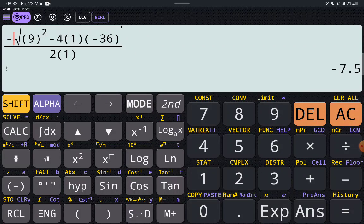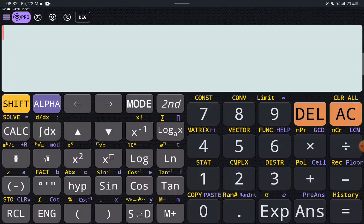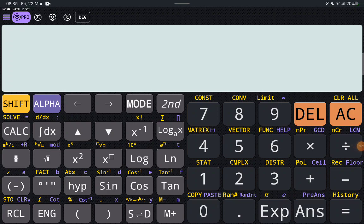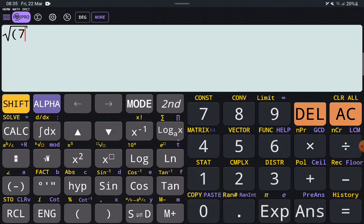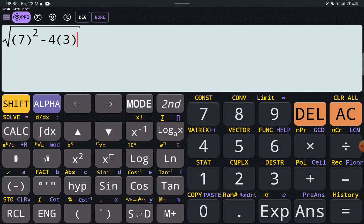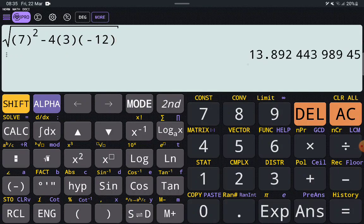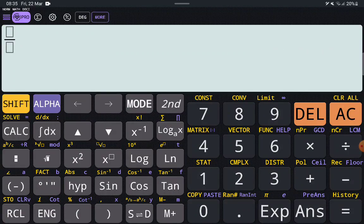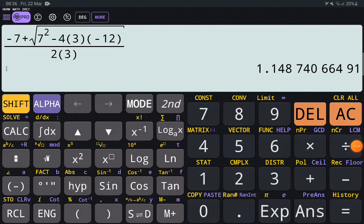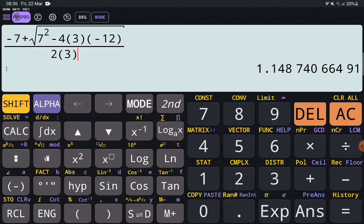So x is going to be equal to negative 7 plus, now we can just go ahead and do that in the middle real quick. So let's clear this all out. What we're going to do is I'm just going to do my square root first. So it's square root 7 squared minus 4 times a, which is 3, times c, which is negative 12. So that gives me 13.89244 blah blah blah. Instead of doing that, let's do the whole thing properly. I'm going to type the whole thing out, and then I'm going to come back to you.